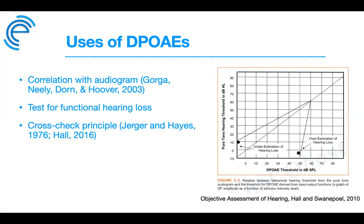Another concern is overestimation of hearing loss when normal OAEs accompany an abnormal audiogram. DPOAEs should not be used in isolation — the cross-check principle, first described by Jerger and Hayes in 1976 and emphasized by James Hall, stresses using more than one test, especially in pediatrics, for accurate and prompt diagnosis of auditory dysfunction. DPOAEs are also useful for identifying functional hearing loss in malingerers seeking compensation.